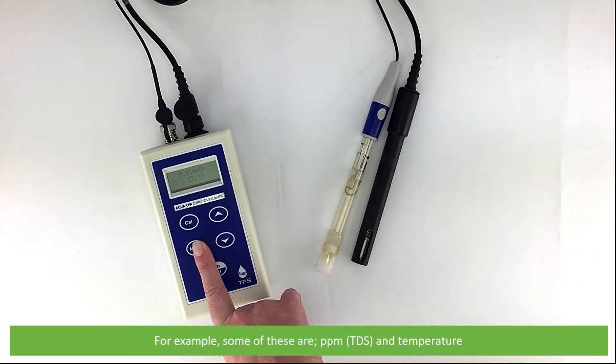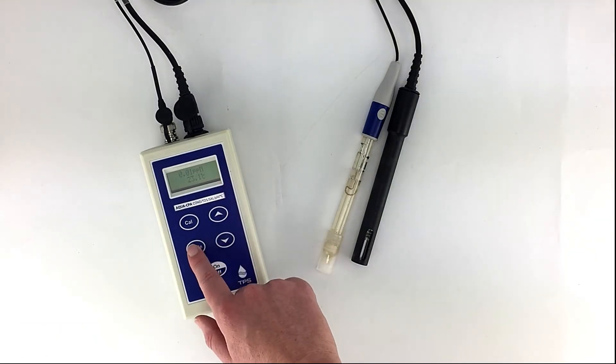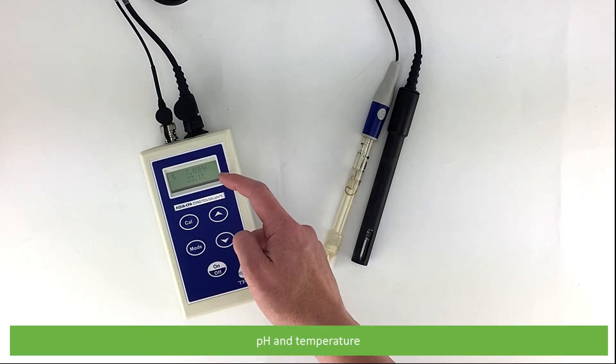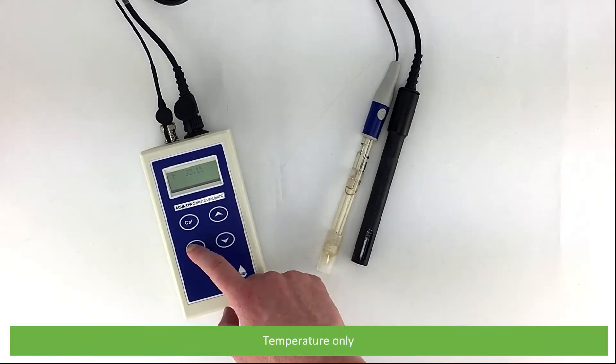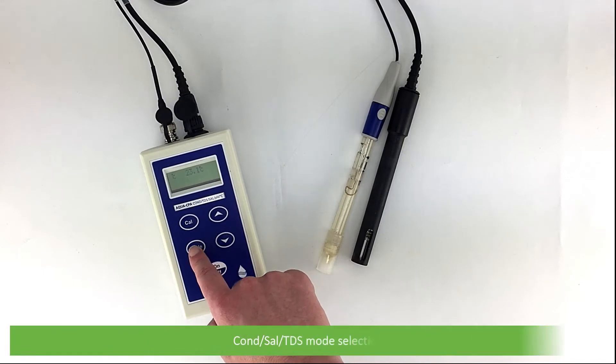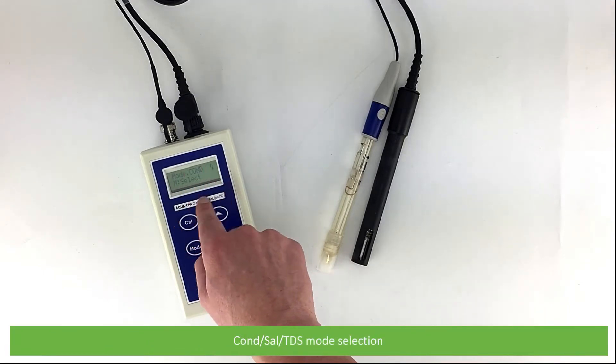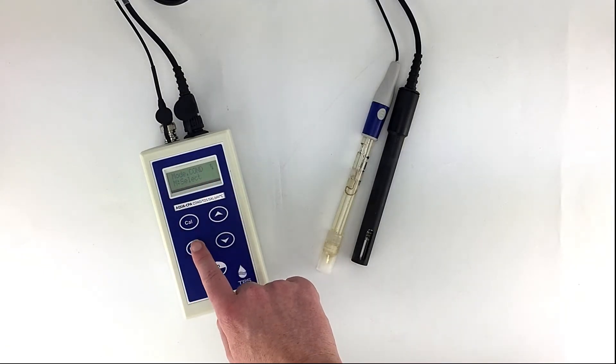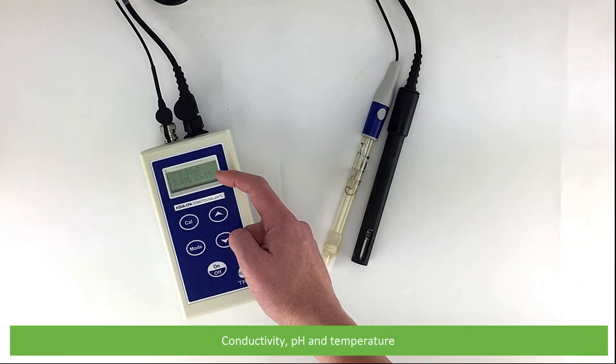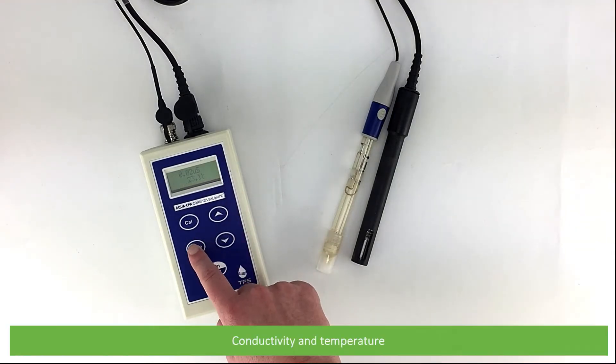These are parts per million and temperature, pH and temperature, temperature only, conductivity, salinity TDS mode selection, conductivity pH and temperature, and conductivity and temperature.